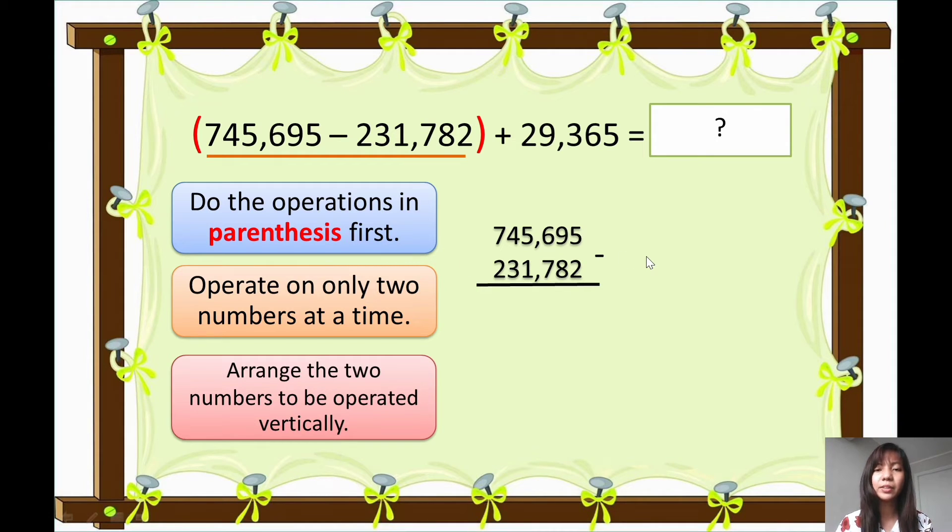9 minus 8 is 1. 6 minus 7, okay, so cannot be, right? You need to borrow from 5 because 6 is smaller than 7. So 6 will become 16, and 5, which you borrow 1 from, so it becomes 4. So 16 minus 7 is 9, and then 4 minus 1 is 3.